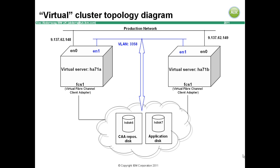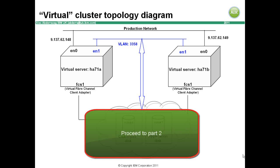Basically serial based communications are passed through VLAN 3358 to the VIOS server which actually performs the SAN based communications on behalf of the cluster node. Why 3358 you ask? This is a rather strange number. I've heard a rumour it is the birthday of the developer. And on that note, let's proceed.